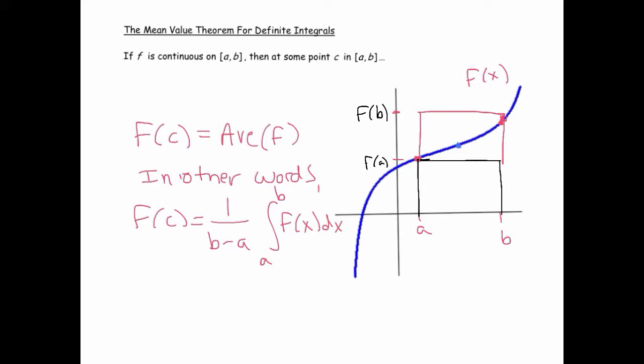So if you imagine just making this small rectangle grow in size, at some point it's going to be the perfect height so that its y-value equals the average value. There is some c here such that when I evaluate the function at c, I'm going to get the average value.